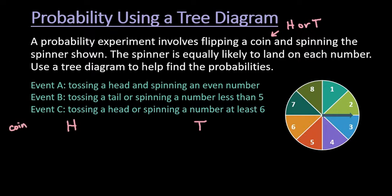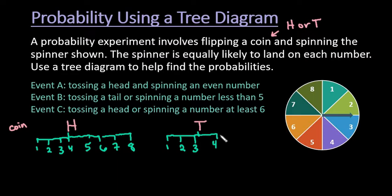From our spinner, I could get a head with a one, a head with a two, a three, a four, five, six, seven, or eight. For our tails, we can do the same thing. I can get a tail with a one, a tail with a two, a tail with a three, tail with four, tail with five, tail with six, seven, or eight.